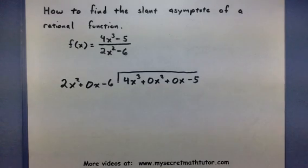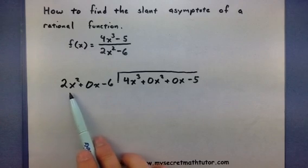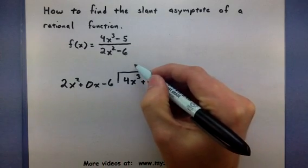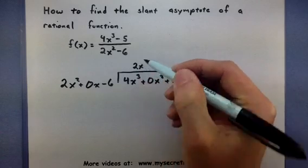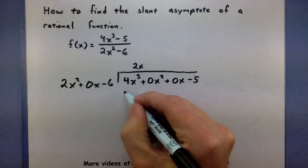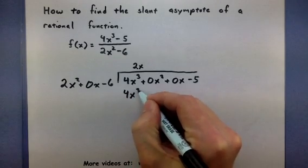All right. Now let's actually go through this division process. 2x squared times what would equal 4x cubed? Well, 2x will do it because 2x squared times 2x will give me 4x cubed. Perfect.